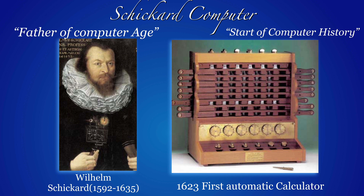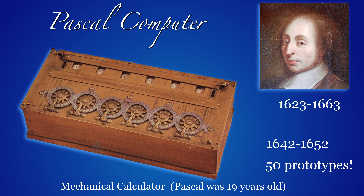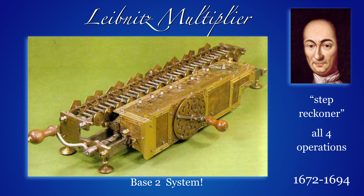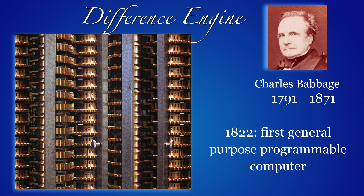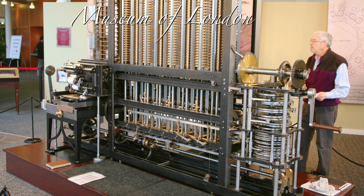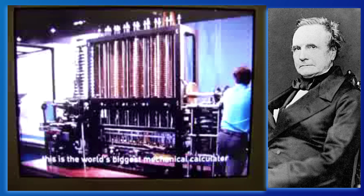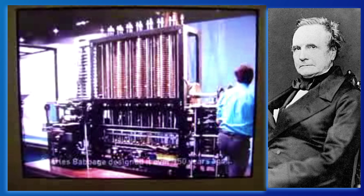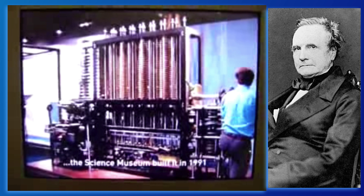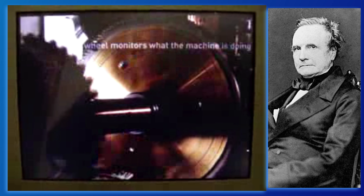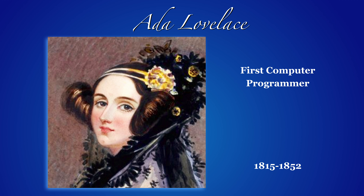Computer history starts with Schickard's computer. Wilhelm Schickard built in 1623 the first automatic calculator. Pascal also built a mechanical calculator — he was 19 years old but built 50 prototypes until it really worked. Leibniz built a computer in 1672, the first machine based on a binary system. Charles Babbage built the first general purpose programmable computer, located at the Museum of London, and there is a YouTube video showing how the machine worked. Ada Lovelace is considered the first computer programmer, working with Charles Babbage.